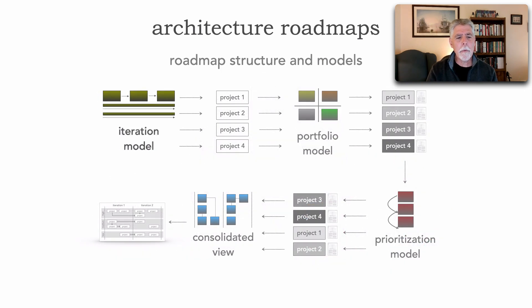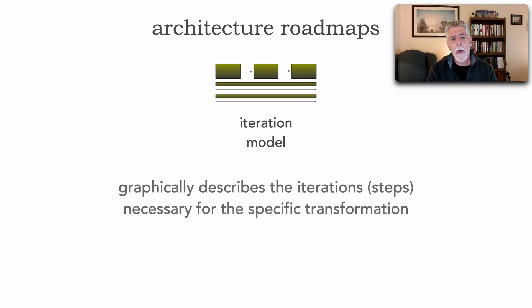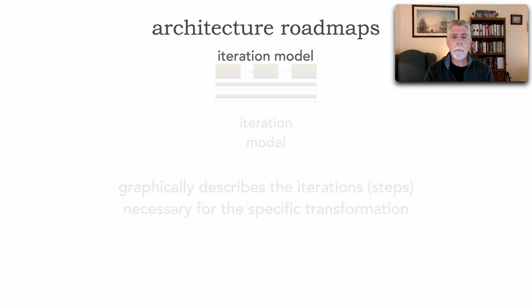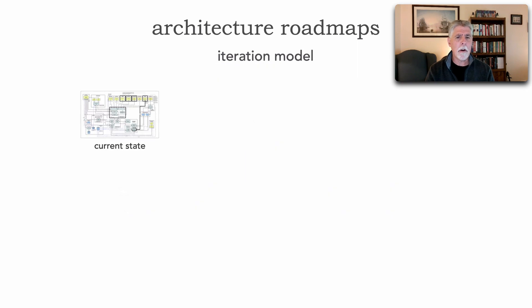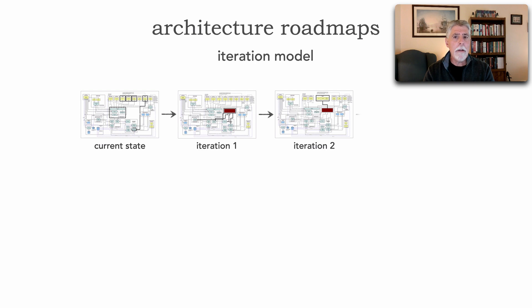In this lesson we're going to take a look at the iteration model, the very first model that lays really the foundational aspects of our roadmap. The iteration model graphically describes the iterations or the steps necessary for that specific type of transformation or initiative. For example, in the iteration model we may start with a current state and then show different iterations, diagramming visually and graphically what the transformation looks like at various stages.